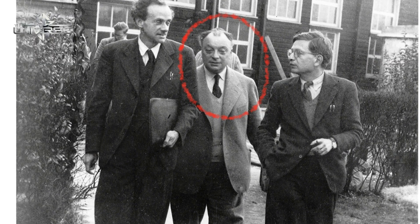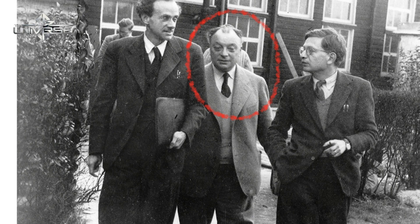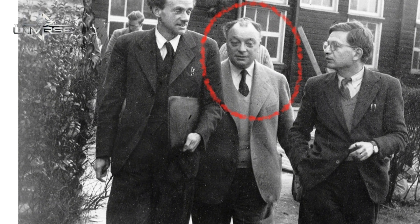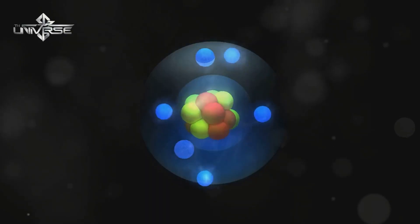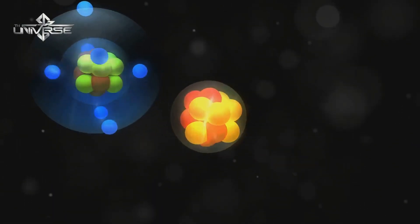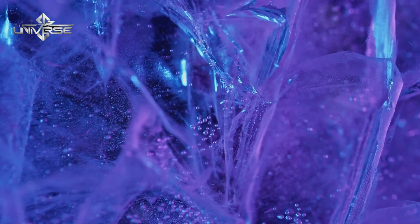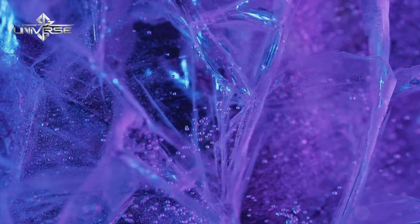This principle, discovered by physicist Wolfgang Pauli, states that no two electrons can occupy the same quantum state at the same time. In simple terms, this rule keeps electrons from crowding into the same space. This no-sharing policy helps create the structure and stability that makes solid objects, well, solid.